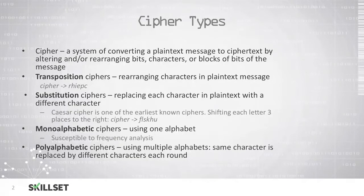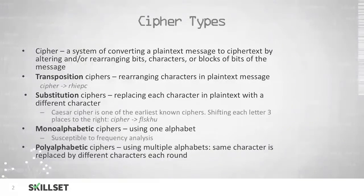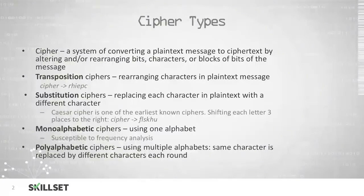With a substitution cipher, we take a certain character in the plain text and replace it with a different character. The Caesar cipher is one of the earliest known examples of this type of cipher. Here we shift all of the letters three places to the right in the alphabet, so C becomes F, I becomes L, P becomes S, and so on.